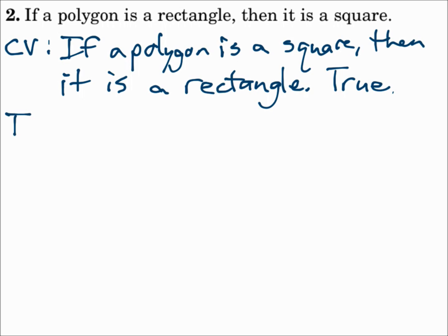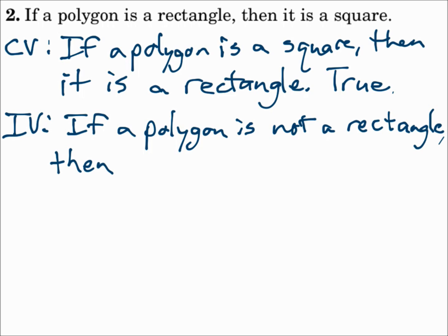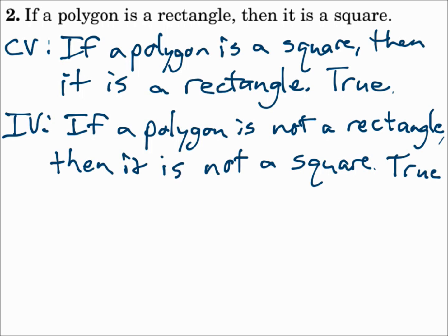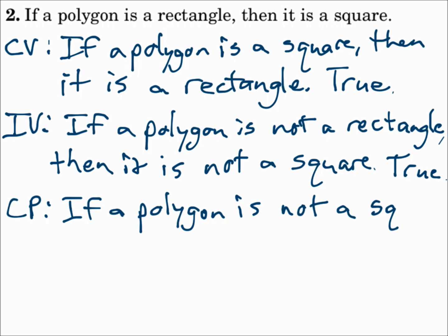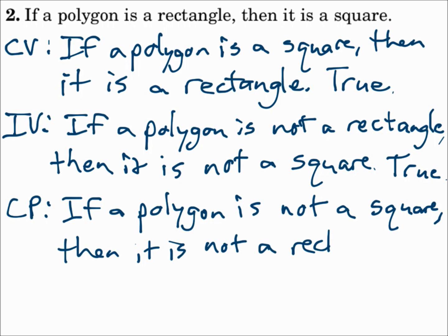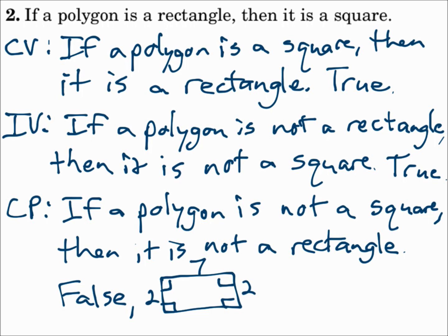The inverse puts a 'not' in each one: if a polygon is not a rectangle, then it is not a square. That's true — a rectangle has four right angles, so if it doesn't have four right angles it can't be a square. The contrapositive flips it and puts a 'not' in each one: if a polygon is not a square, then it is not a rectangle. That's false — because a polygon can be a rectangle and not a square, as shown in the counterexample drawing.